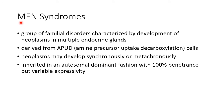First, let us see about multiple endocrine neoplasia syndromes, i.e., MEN syndromes. These are a group of familial disorders characterized by development of neoplasms in multiple endocrine glands. These neoplasms are derived from APUD cells, i.e., amine precursor uptake decarboxylation cells. These neoplasms may develop synchronously or metachronously. MEN syndromes are inherited in an autosomal dominant fashion with 100% penetrance but variable expressivity.